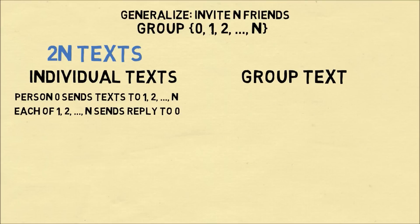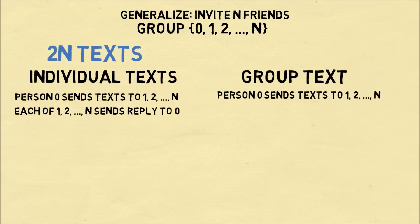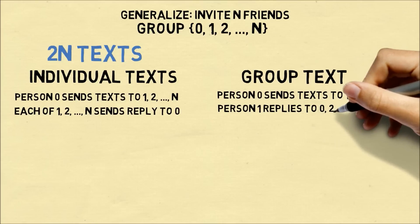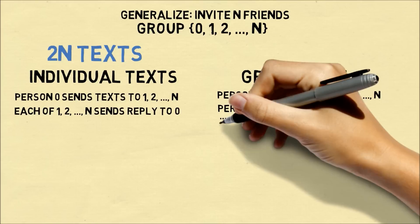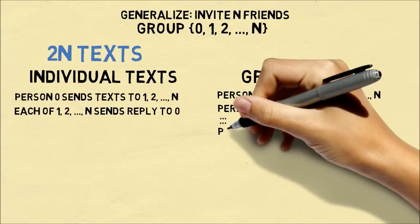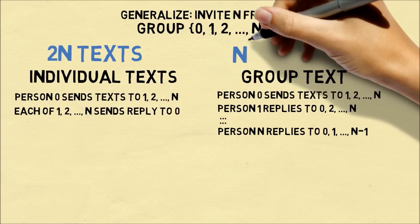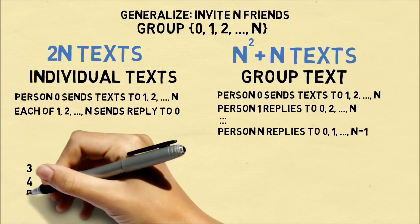If you organize it as a group text, then person zero would send a group text which goes to each person in the group. The first person would reply to each person in the group, and so on, so that each person in the group is replying. Since there are n plus one people each sending n messages, that means there are a total of n squared plus n texts sent within the group.